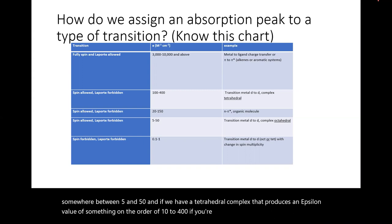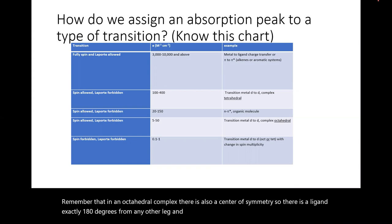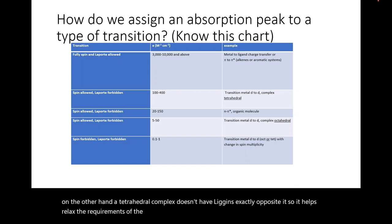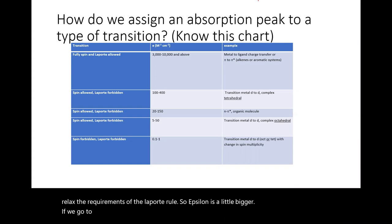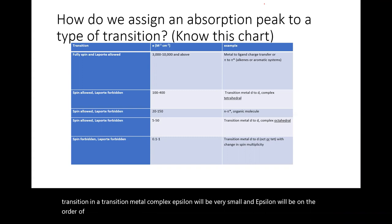The difference between octahedral and tetrahedral arises because an octahedral complex has a center of symmetry — there is a ligand exactly 180 degrees from any other ligand. A tetrahedral complex lacks ligands exactly opposite one another, which helps relax the Laporte rule requirements, so epsilon is a little bigger. When we have both a spin-forbidden and a Laporte-forbidden transition, epsilon will be very small — on the order of one or even less.